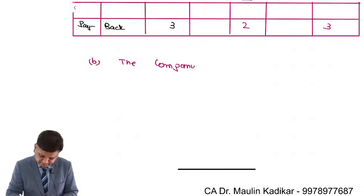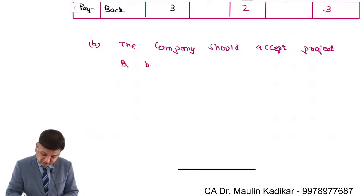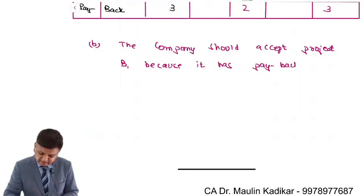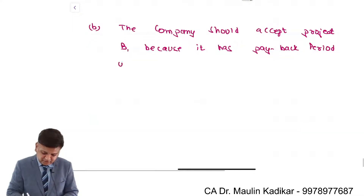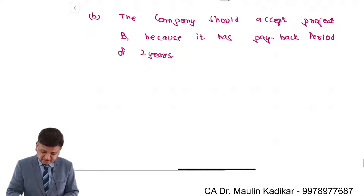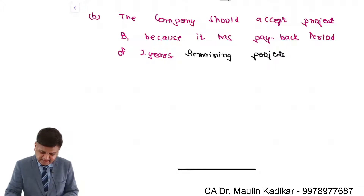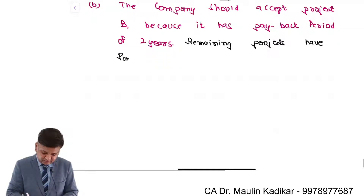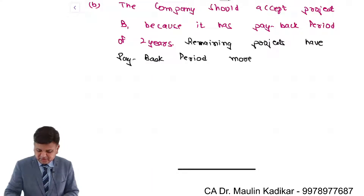The company should accept Project B because it has a payback period of 2 years. Remaining projects have a payback period of 3 years and are therefore rejected.